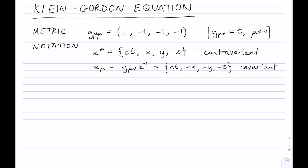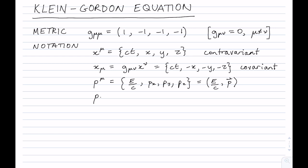Similarly we can define the momenta. So p^μ is (E/c, p_x, p_y, p_z), which we sometimes write as (E/c, **p**) — that's the contravariant momentum. And again we can form the covariant version, which is just (E/c, -**p**) — that's the covariant version.